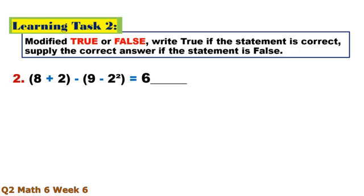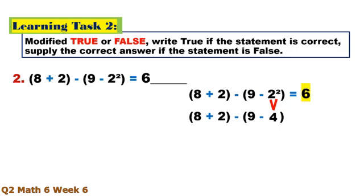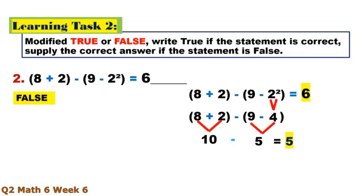Number 2. Exponent first: 2 times 2 equals 4. Then inside the parentheses: 8 plus 2 equals 10. 9 minus 4 equals 5. Then 10 minus 5 equals 5. So this is false — the correct answer is 5.